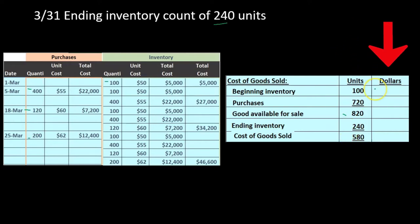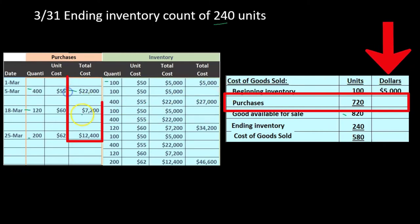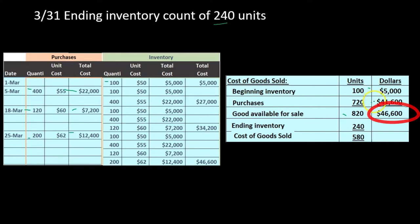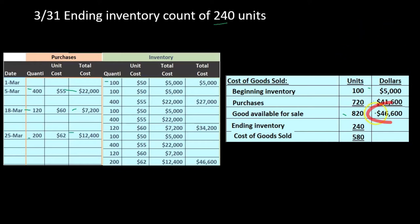Now we do the same in dollars. Beginning inventory was $5,000. Purchases were $22,000 plus $7,200 plus $12,400 equaling $41,600. Goods available for sale is $46,600. This amount is the same under any method — FIFO, LIFO, average, perpetual, periodic — because purchases are what we actually paid and there is no estimate.